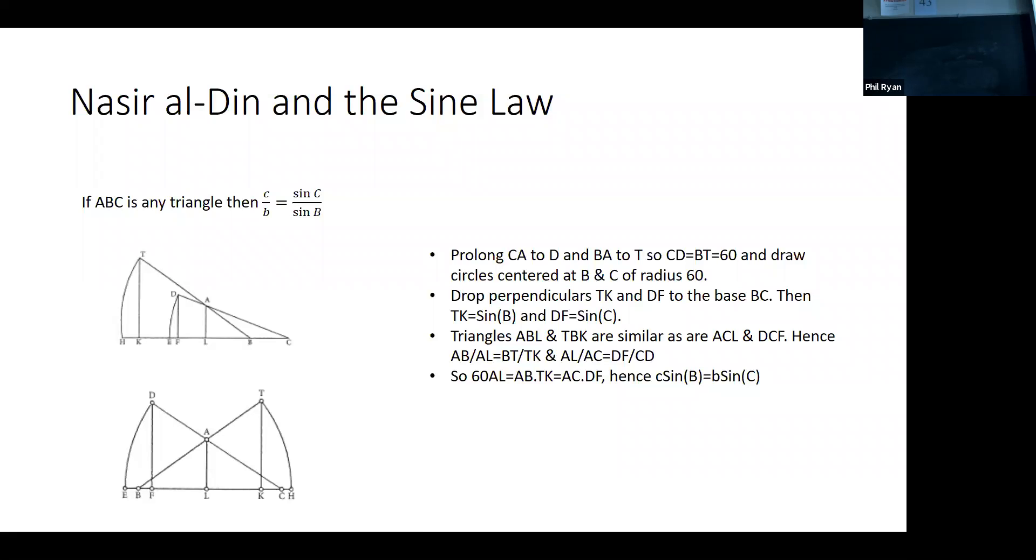But AB is exactly side C. AC is exactly side B. These are defined to be sine of B and sine of C. You just rearrange that and you get the sine law. It actually follows a lot easier than a lot of the other proofs.